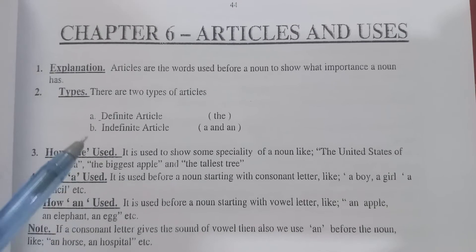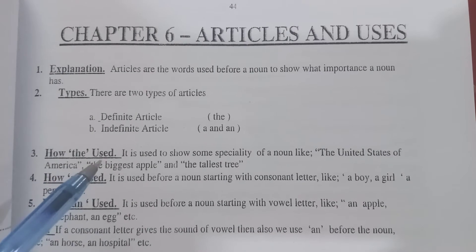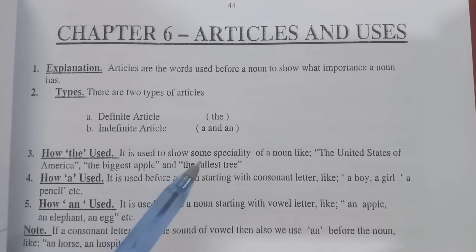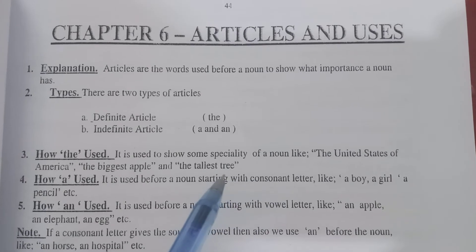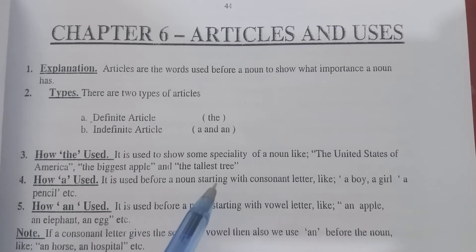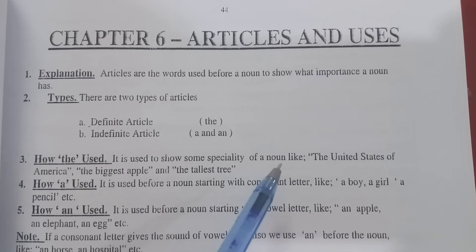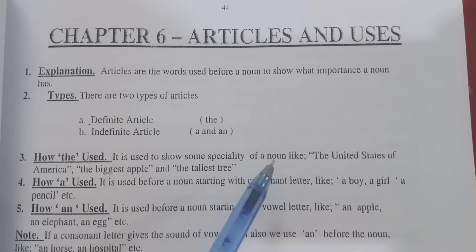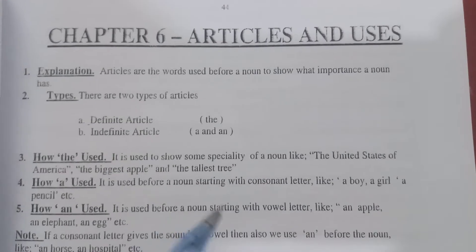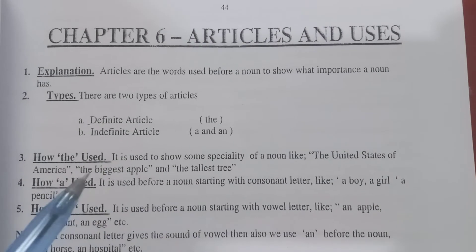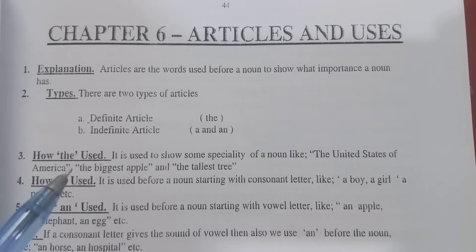Now we will read about the use of 'the.' 'The' is used to show some specialty of a noun — it is used for specification, meaning specific places, specific things, specific persons. For example, 'The United States of America' — this is a specific noun, a specific place, so we use 'The United States of America.'